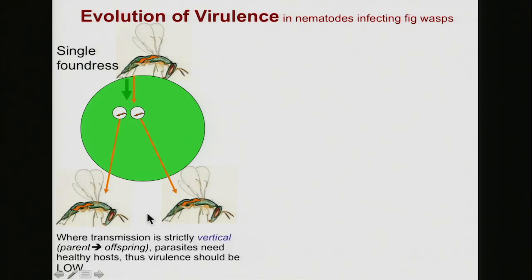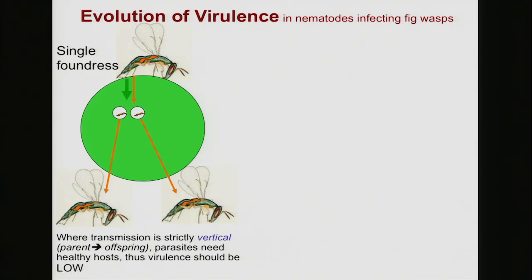When this transmission is strictly from parent to child, that's called vertical transmission. In this case, the parasite really needs to make sure that its host is going to stay healthy until it gets to a new fig, lays its eggs, and starts the whole cycle over again. So the parasite has to be really careful to be nice to its host. Virulence should be really low when transmission is vertical.